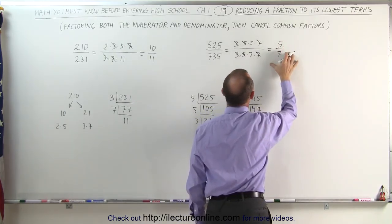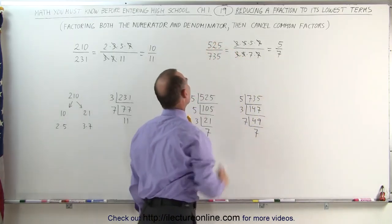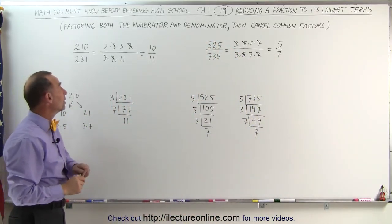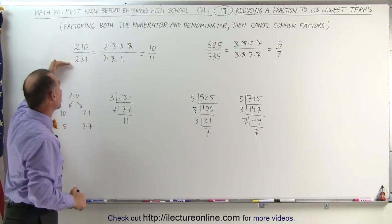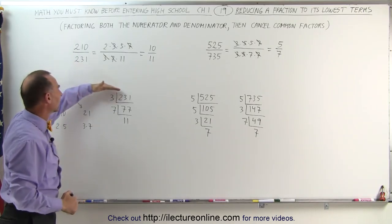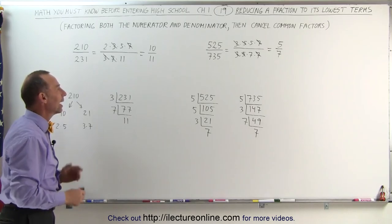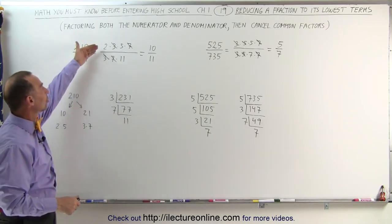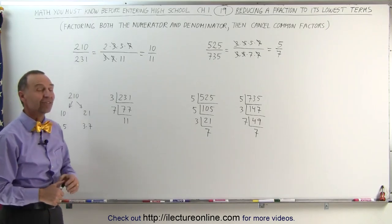This is the reduced form, the lowest form of this original fraction. And that's how we do that. Again, we factor the numerator and the denominator separately, either by whatever method is most appealing to you, and then you reduce by simply canceling out the common factors in the numerator and the denominator. And that's how it's done.